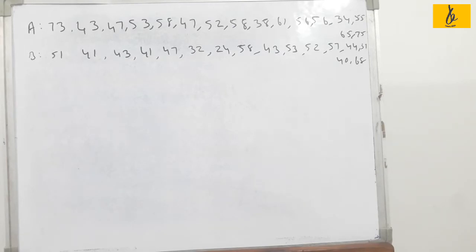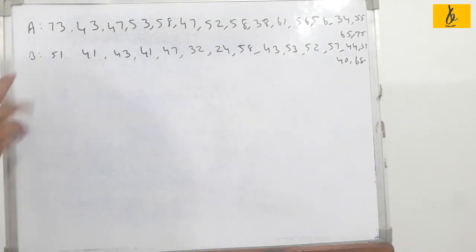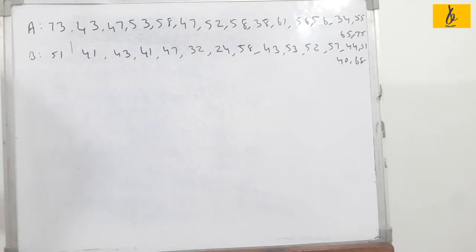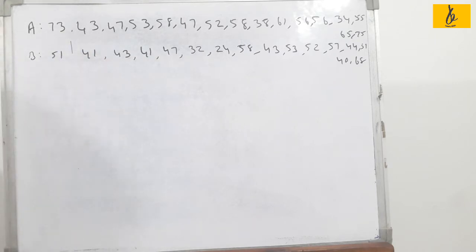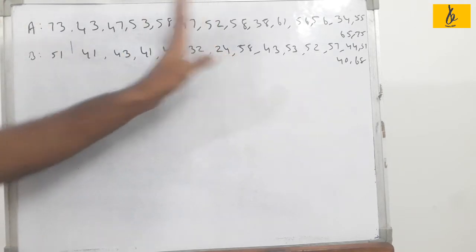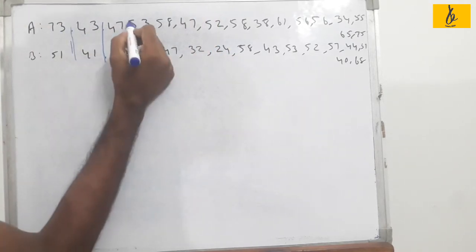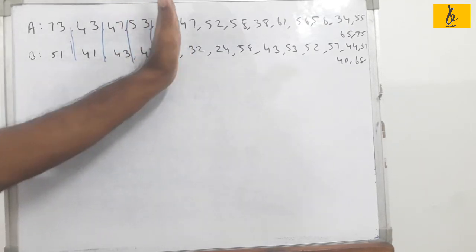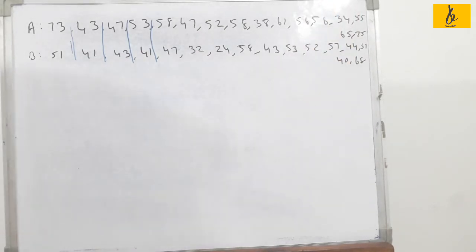Given below are 16 pairs of values showing the performance of two machines, A and B. We are going to test whether there is a significant difference between the performance of the two machines. The table value at 5% significance is 25.